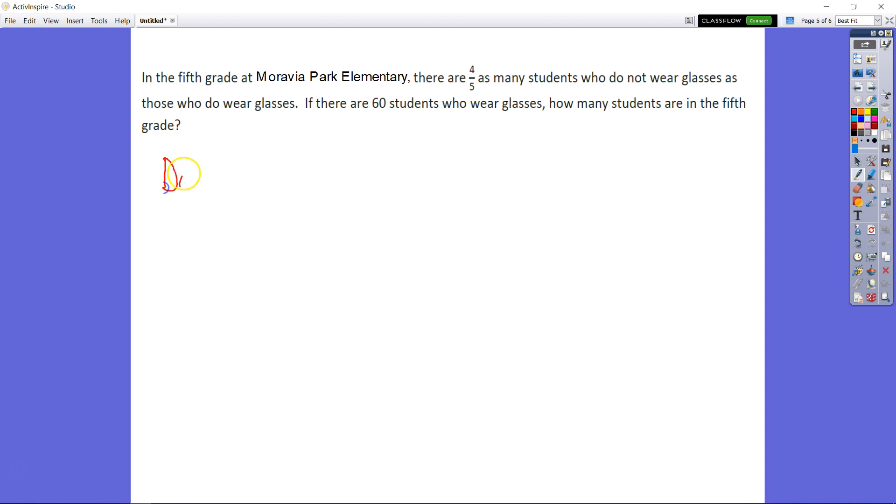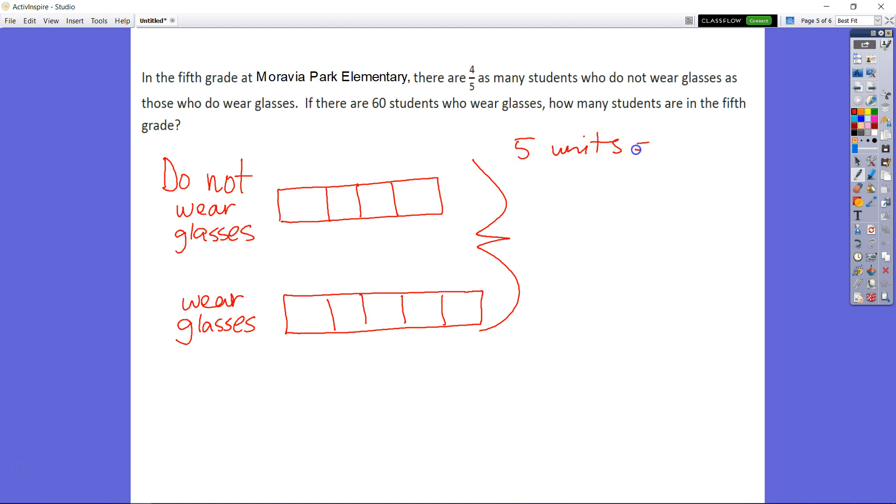We know that there are 4 fifths students that do not wear glasses. Similar to our exit ticket today, we're going to have 2 grids. We said 4 fifths and then we have our 5 fifths, and we know that there's a total of 5 units. If 5 units equals 60, then 1 unit equals 60 divided by 5. So then 1 unit is equal to 12.